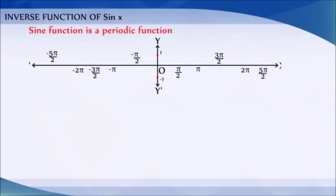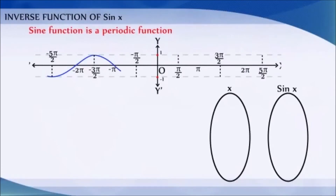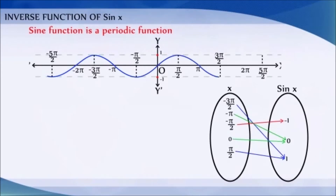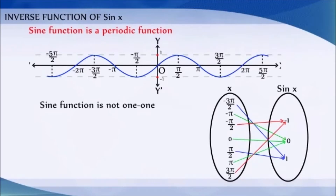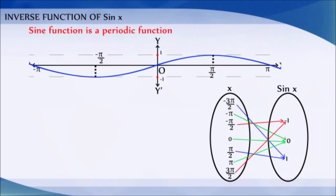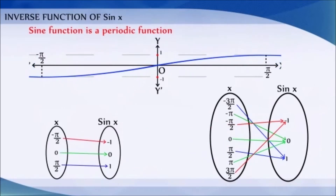We know that the sine function is a periodic function — the value of sine is always between minus 1 and 1 for intervals like (−3π/2, −π/2), (−π/2, π/2), (π/2, 3π/2), etc. Therefore, sine function is not a one-to-one function. If we restrict its domain to [−π/2, π/2], then it becomes one-to-one and onto with range [−1, 1].